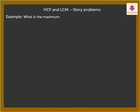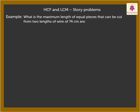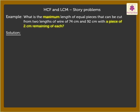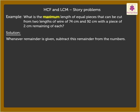What is the maximum length of equal pieces that can be cut from two lengths of wire of 74 cm and 92 cm with a piece of 2 cm remaining of each? Here, as the word maximum is used, we need to find the HCF. But before we find the HCF, as the length of the remaining piece of each wire — that is, the remainder — is given, we first need to subtract this remainder from the numbers.